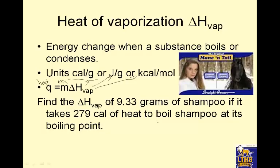So I have 9.33 grams of shampoo if it takes 279 calories. So I'm going to do this thing again. Q equals M delta H vap. So 279 calories and mass is 9.33. And delta H vap, so H equals who knows what. So then 279 divided by 9.33, I will use a calculator for that one. 279 divided by 9.33 is 29.9. And my units would be, notice it's calories, because I'm going to have calories, I'm dividing by this which is going to be grams. Calories per gram.